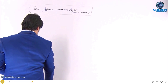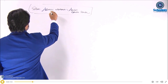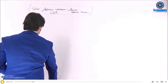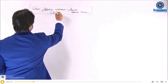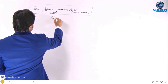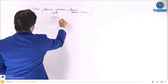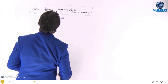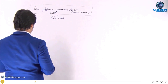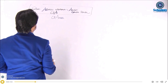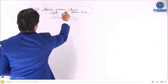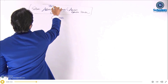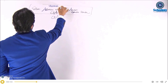Acoustic neuroma is nothing but a cerebellopontine angle tumor. The most common tumor at the CPA is acoustic neuroma. Another name for acoustic neuroma is vestibular schwannoma. So CP angle tumor equals acoustic neuroma equals vestibular schwannoma.